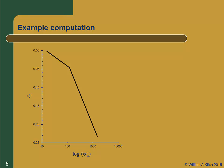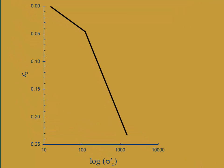I'll do a quick example and show you a trick to make this computation very simple. We're using the more common form with vertical strain as a function of the log of effective stress, and we'll be computing the compression and recompression ratios. It's easiest to compute the slopes of the two lines over a full log cycle, so we'll draw two vertical lines one log cycle apart — at effective stresses of 100 and 1000. We could have picked any two points one log cycle apart, such as 5 and 500 or 200 and 2000. We then extend the virgin curve so it intersects both vertical lines and compute the slope at points A and B.